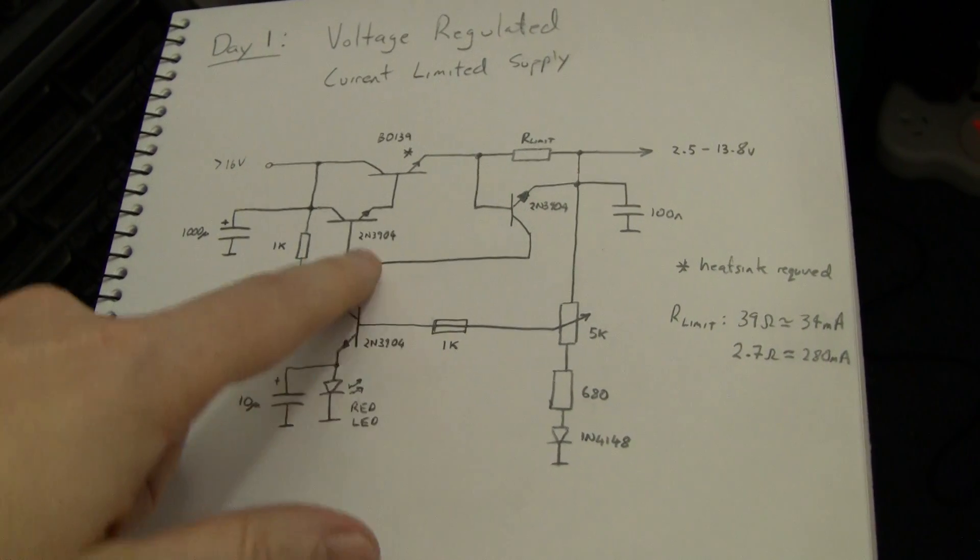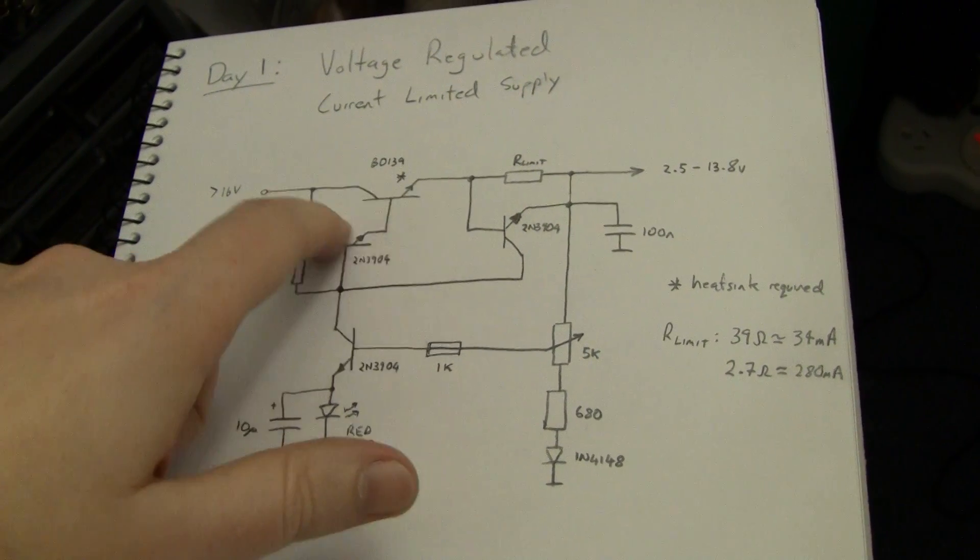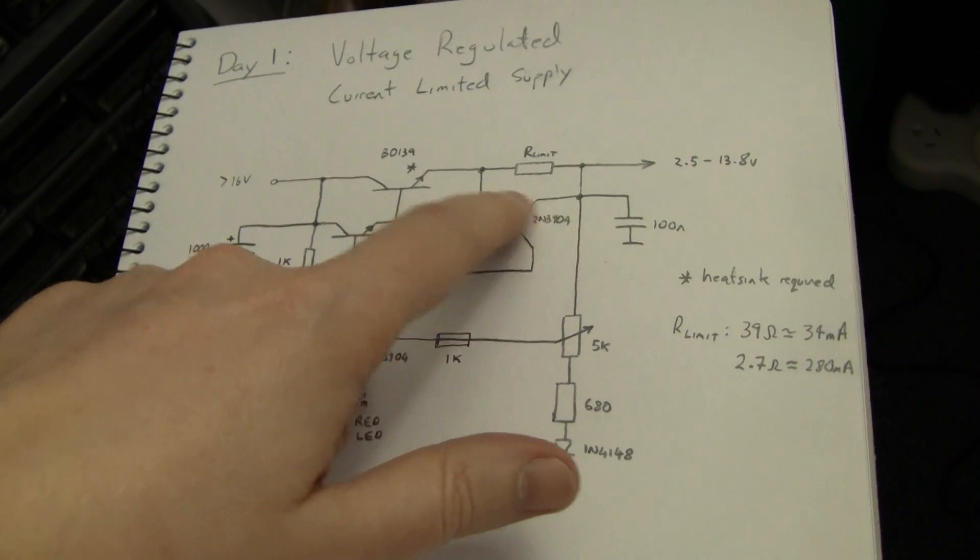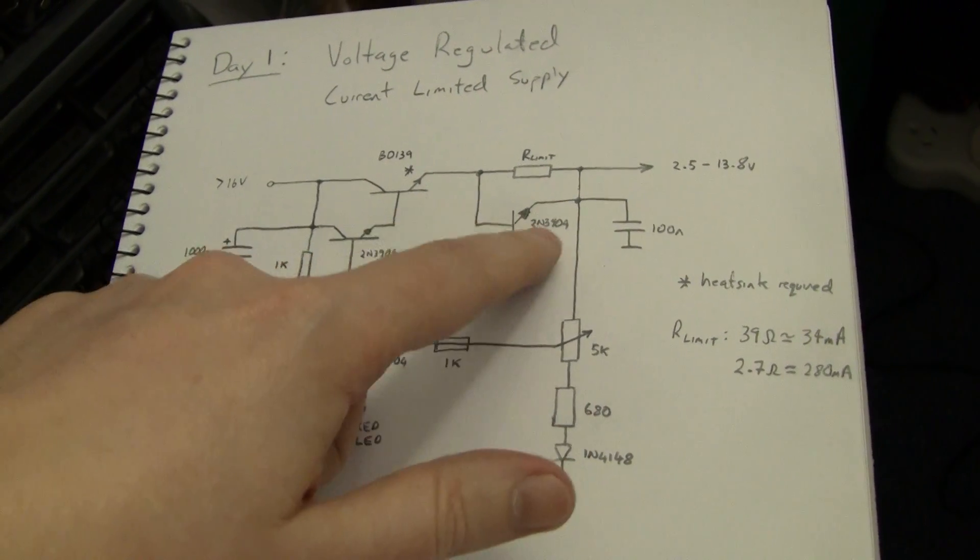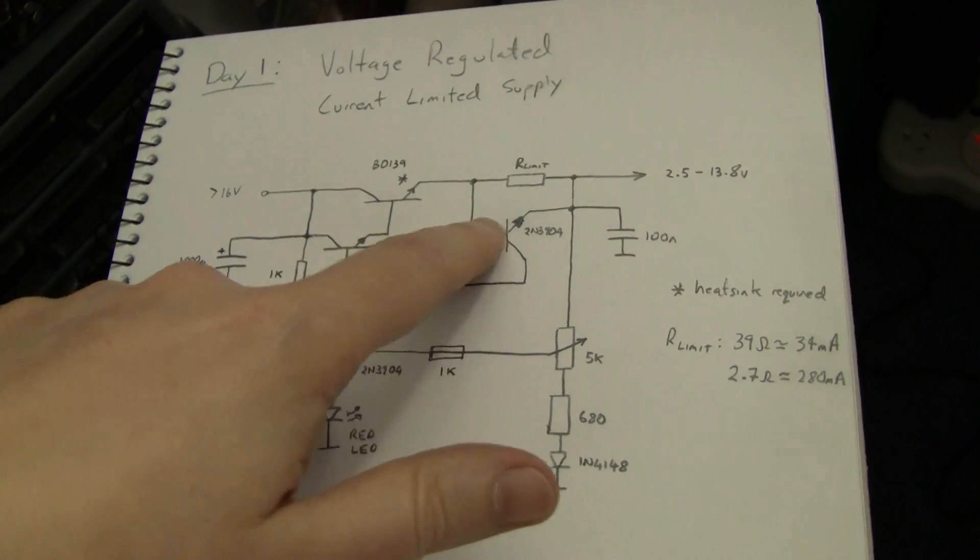It's a pretty simple circuit. You've got a Darlington pair here as a pass transistor that actually does the main regulation. This transistor will get turned on when the voltage across the limiting resistor exceeds its base emitter drop and it will cut off the current that's being fed to the power transistor.